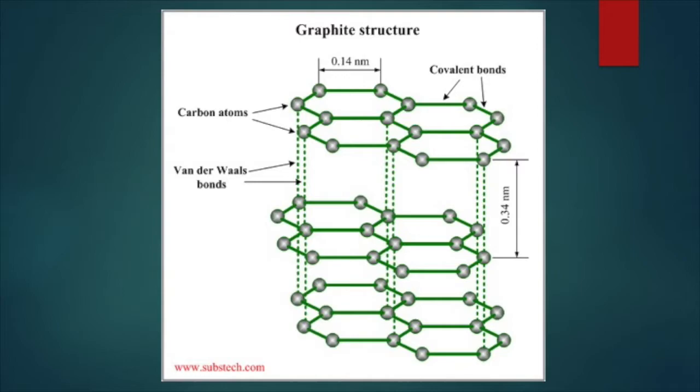Graphene layers are bonded together via van der Waals bonds, which allows for single layers to be separated rather easily under the right conditions. Famously, the first graphene layer was exfoliated from graphite by Andre Geim and his colleagues at the University of Manchester using nothing other than store-bought scotch tape.